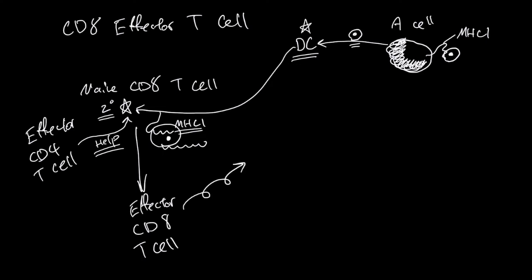This effector CD8 T cell will now go out of the secondary lymphoid tissue to the body. When this effector CD8 T cell gets to the source of the problem, this effector cell can react to this molecule - it's the same molecule that the dendritic cell brought in. This secondary stimulation here doesn't need the help from the effector CD4 T cell.